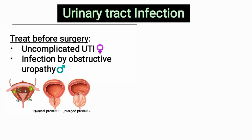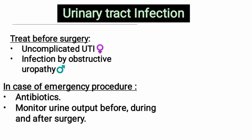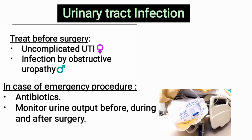Urinary tract infections — uncomplicated UTI in females and infection by obstructive uropathy — should be treated before elective surgery. If it is an emergency procedure, antibiotics are given and urine output is monitored before, during, and after surgery.